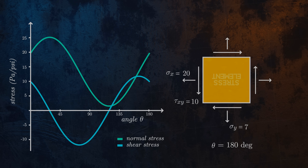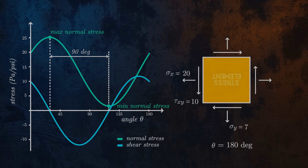We can observe that for certain angles, the normal stress will reach maximum and minimum values, and that these maximum and minimum values are separated by an angle of 90 degrees. This means that when we rotate our stress element such that we have the maximum normal stress on the x-face of our element, we always have the minimum normal stress on the y-face.